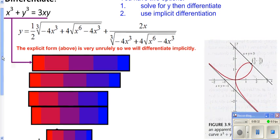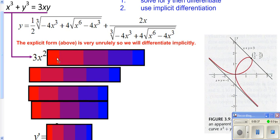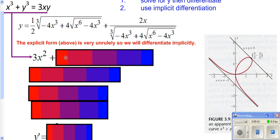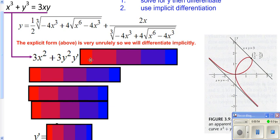So we'll go ahead and do the implicit differentiation of this. Put the 3 in front, decrease your exponent by 1, multiply it by dx over dx, because it's the derivative of the inside of x with respect to x — but that's 1, so we don't need to write that. For y cubed, put the 3 in front, decrease your exponent by 1, then multiply by the derivative of the inside, which is y with respect to x, or y prime.